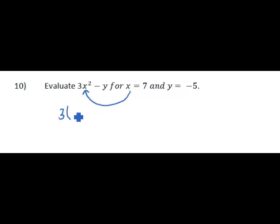So we'll have 3 times 7 squared, and then we replace the y value with the value of y that we have. So we have the minus, and then the value of y is substituted in to be negative 5.